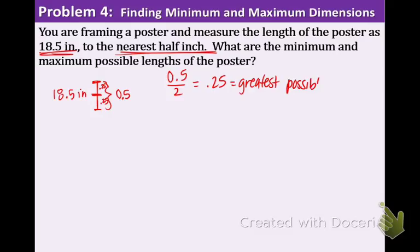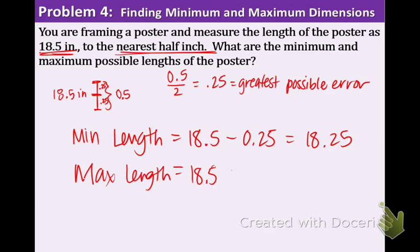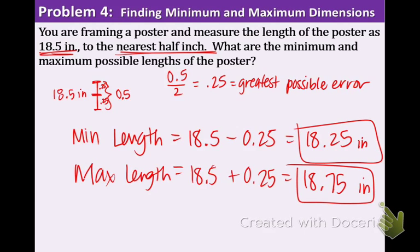What we really need to do is just add 0.25 and subtract 0.25 and we'll get our answer. The minimum length is going to be the smaller value, so we should subtract. 18.5 minus 0.25 equals 18.25 inches. And then the max length will be the bigger one, 18.5 plus 0.25, which equals 18.75 inches. Just to check, subtract 18.75 minus 18.25 and you will get the 0.5 of the nearest half inch measurement. That completes this lesson. You can try the lesson check right now or wait until we do some problems together during class.